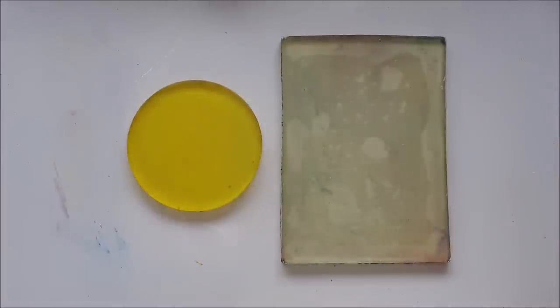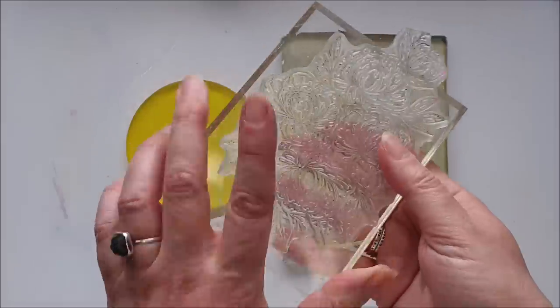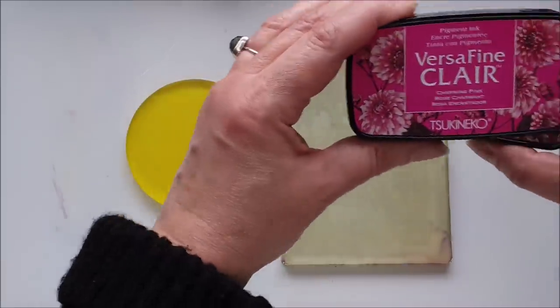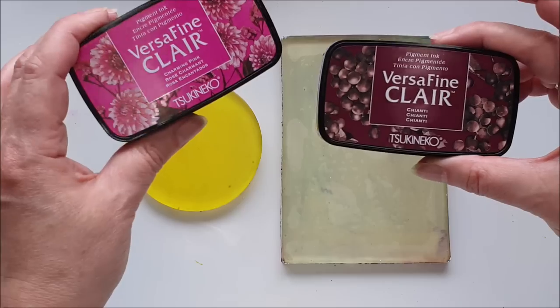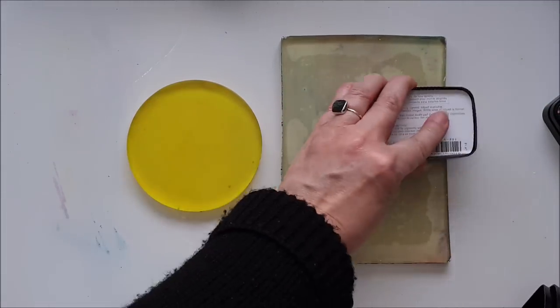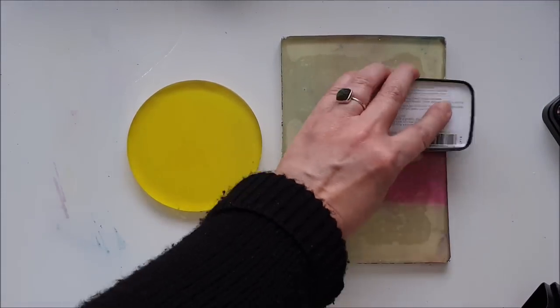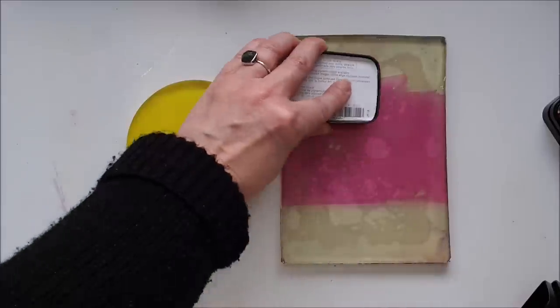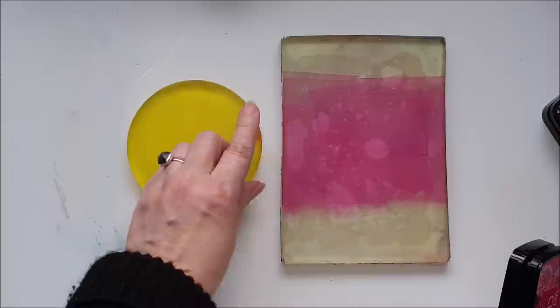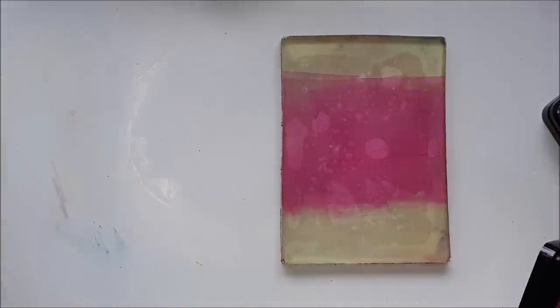For our third technique I'm going to be using that floral stamp from Hero Arts and Gina K. I'm going to use charming pink and Chianti. That's the two colours I'm going to use for this one. And I'm going to use the seven by five inch plate.